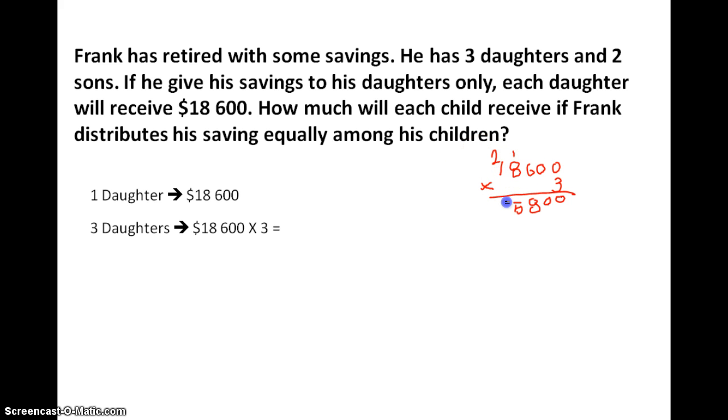So 1, 2, 2, 5. So Frank's savings is $55,800. Alright.